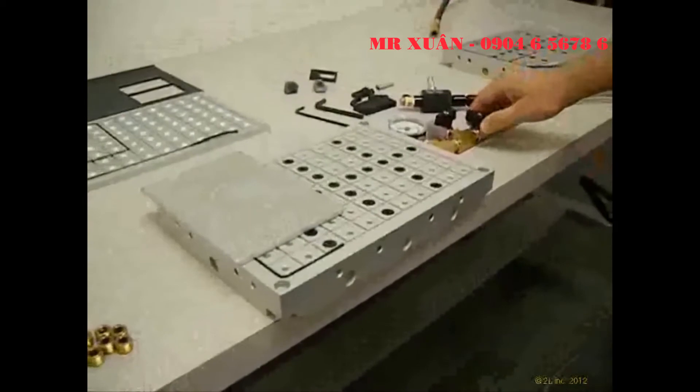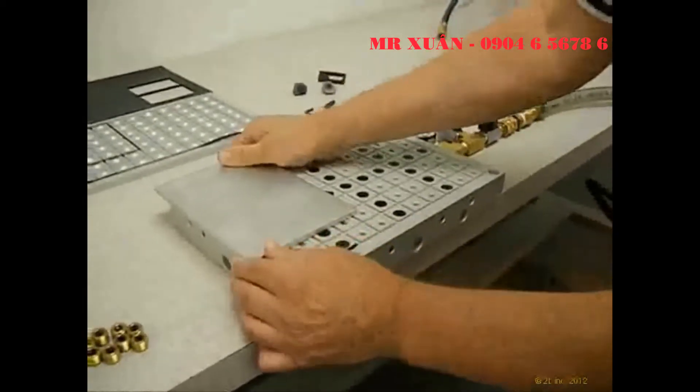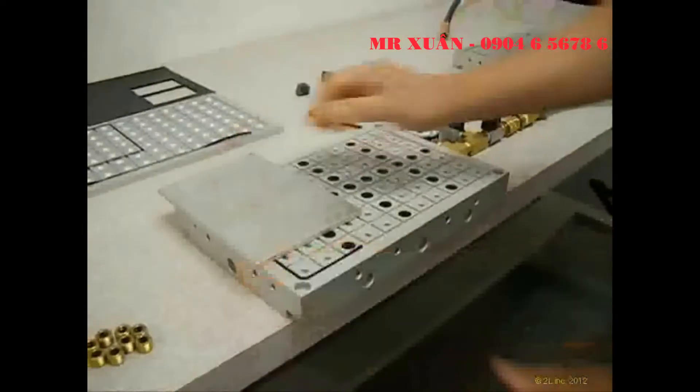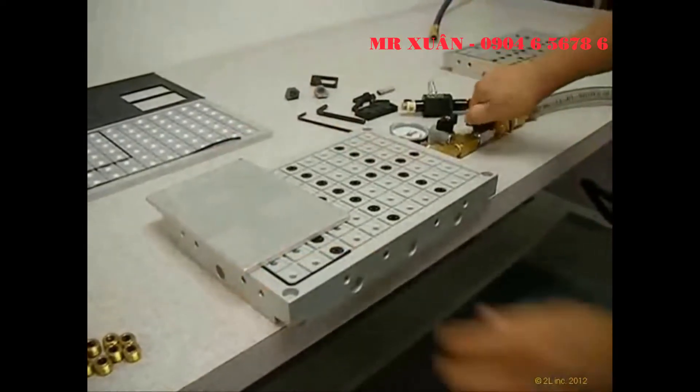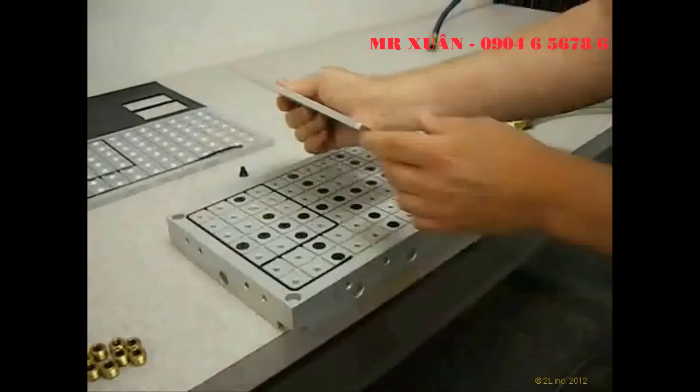When we turn the valves on, now our part is held down firmly to the table and I can't remove that. If we turn it off and release the vacuum, then we can get our part off the table.